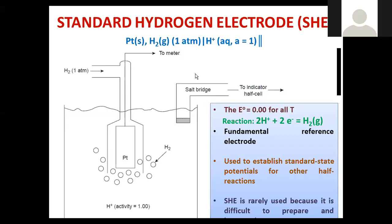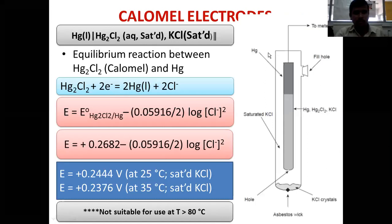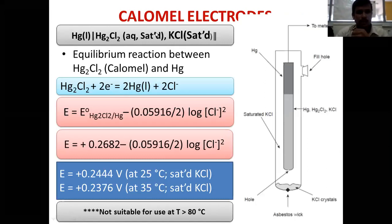Let us move on to the calomel electrode. Calomel is nothing but mercurous chloride, Hg₂Cl₂. The reference electrodes are used always as anode. The anodic reaction is: 2Hg (liquid) + 2Cl⁻ gives rise to Hg₂Cl₂ plus two electrons. The species here is mercury liquid, connected with saturated calomel — that is mercurous chloride.